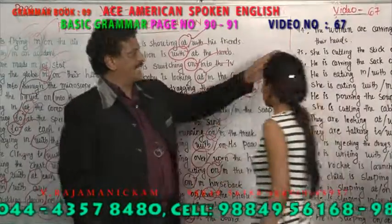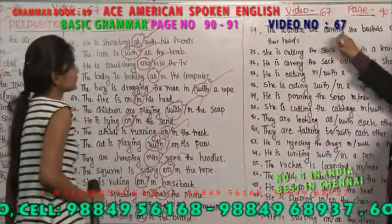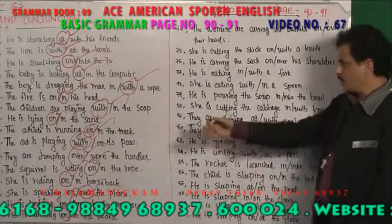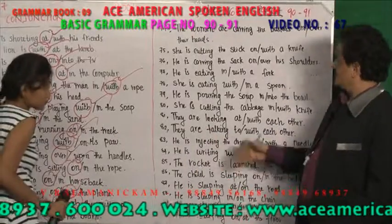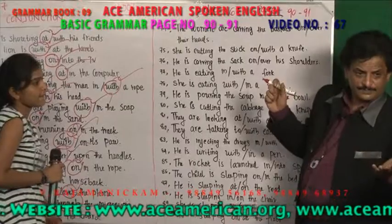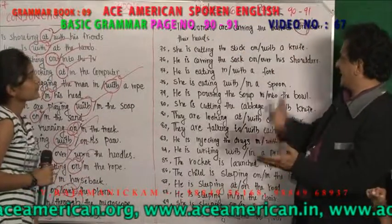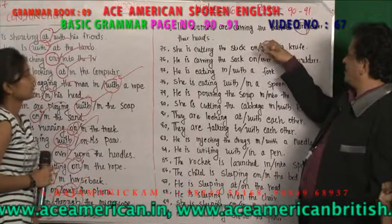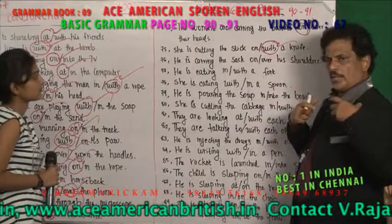The women are carrying the baskets over their heads or on their heads? 'On their heads.' She is cutting the stick with a knife or on the knife? 'With the knife' — 'with' is used with an instrument. He is carrying the sack over his shoulder or on his shoulder? 'On his shoulder.'